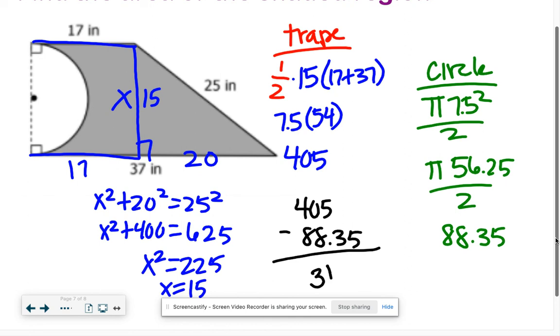Last step is to subtract. So 405 minus 88.35 should give us a total of 316.7 inches squared. We did it, good work. That's what I have for you, we'll see you in class, bye.